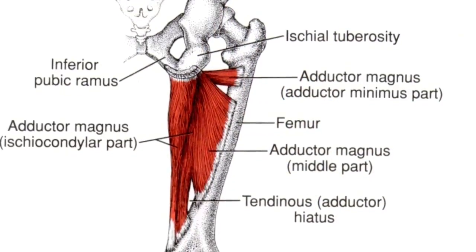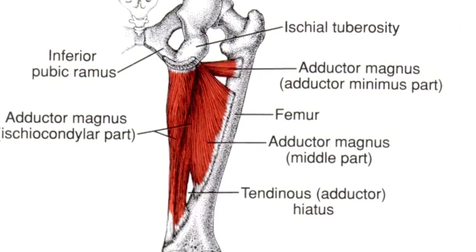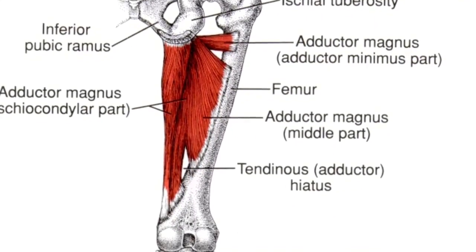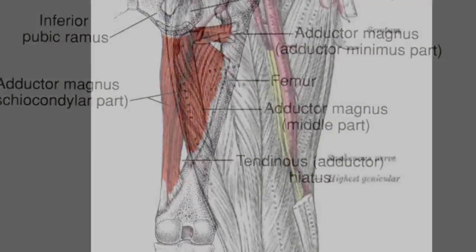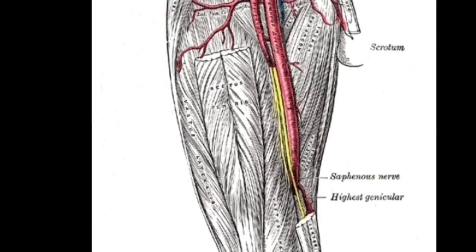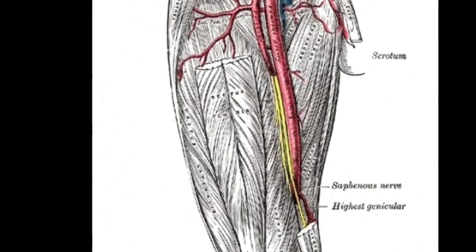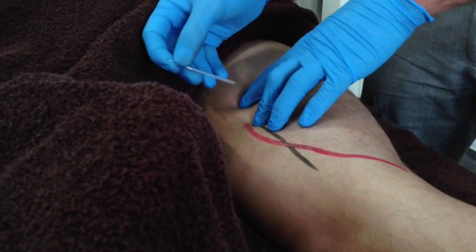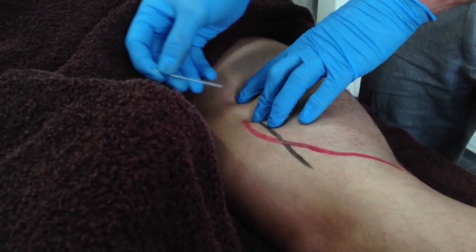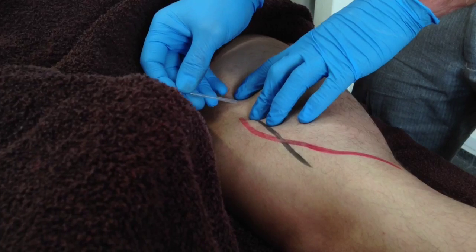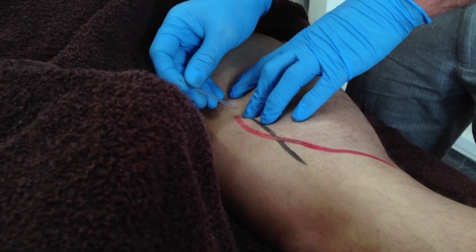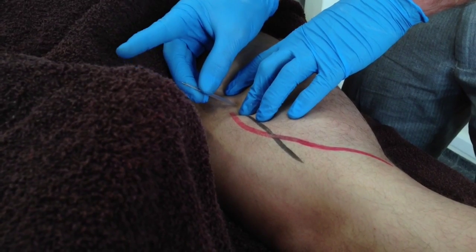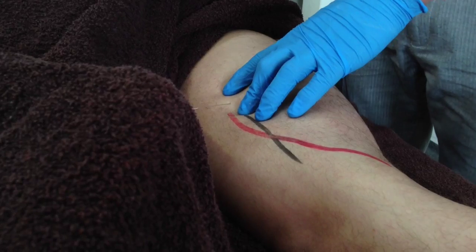The needle is inserted in an anterior to posterior oblique direction, away from the femoral artery and vein, as well as the great saphenous vein and saphenous nerve. The more proximal the application, the lesser the angle that is required to avoid these structures, with the proximal trigger points needled at an almost perpendicular angle to the skin.